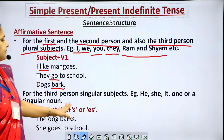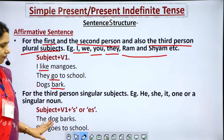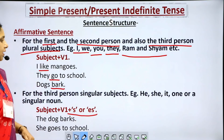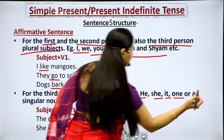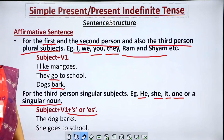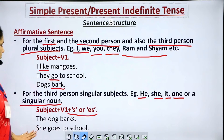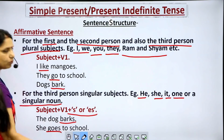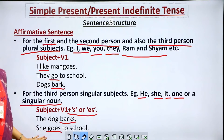For third person singular subjects — he, she, it, one, or a singular noun — we have a different rule: subject plus V1 plus S or ES. We add S or ES to the first form of the verb. Examples: 'The dog barks.' — S is added. 'She goes to school.' — ES is added. This is because the subject is third person singular: 'the dog' is a singular noun, and 'she' is a singular pronoun.